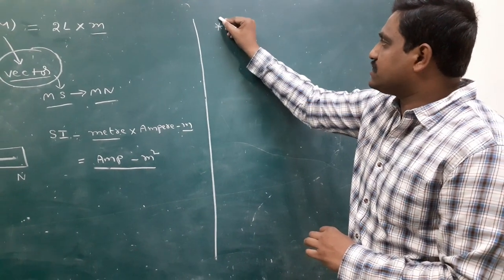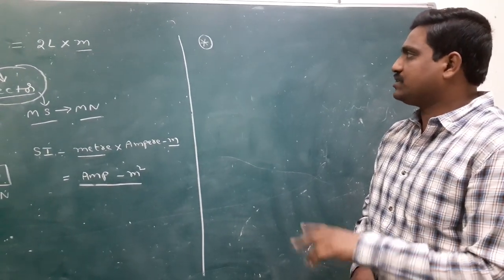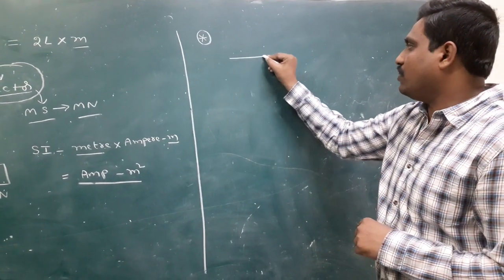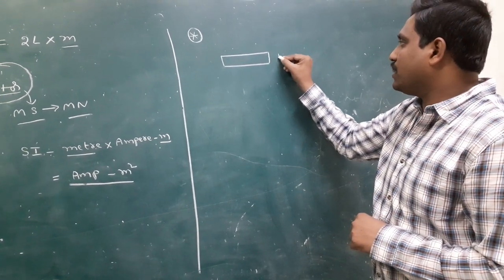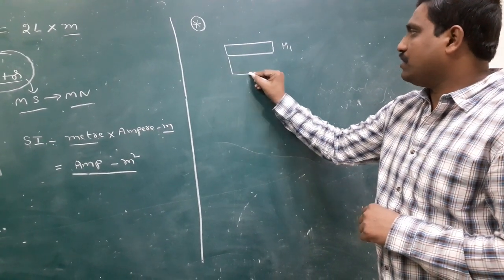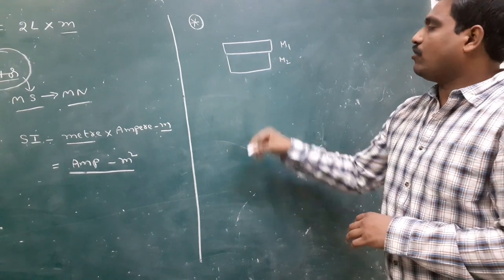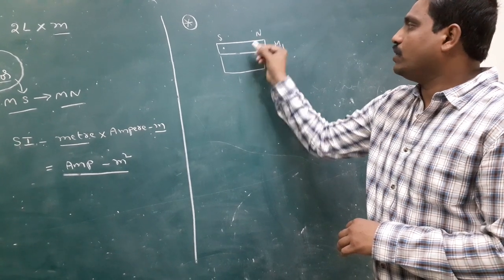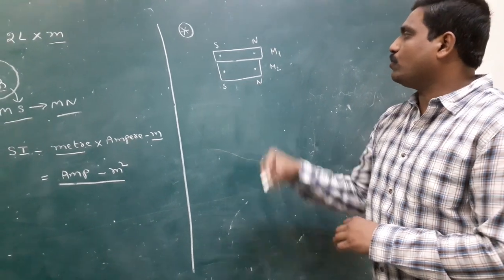For example, I take two bar magnets. The first bar magnet has magnetic moment M1. This is another bar magnet with magnetic moment M2. According to this diagram, this pole is south pole and this pole is north pole for the first magnet. This is the south pole and this is the north pole of the second magnet.